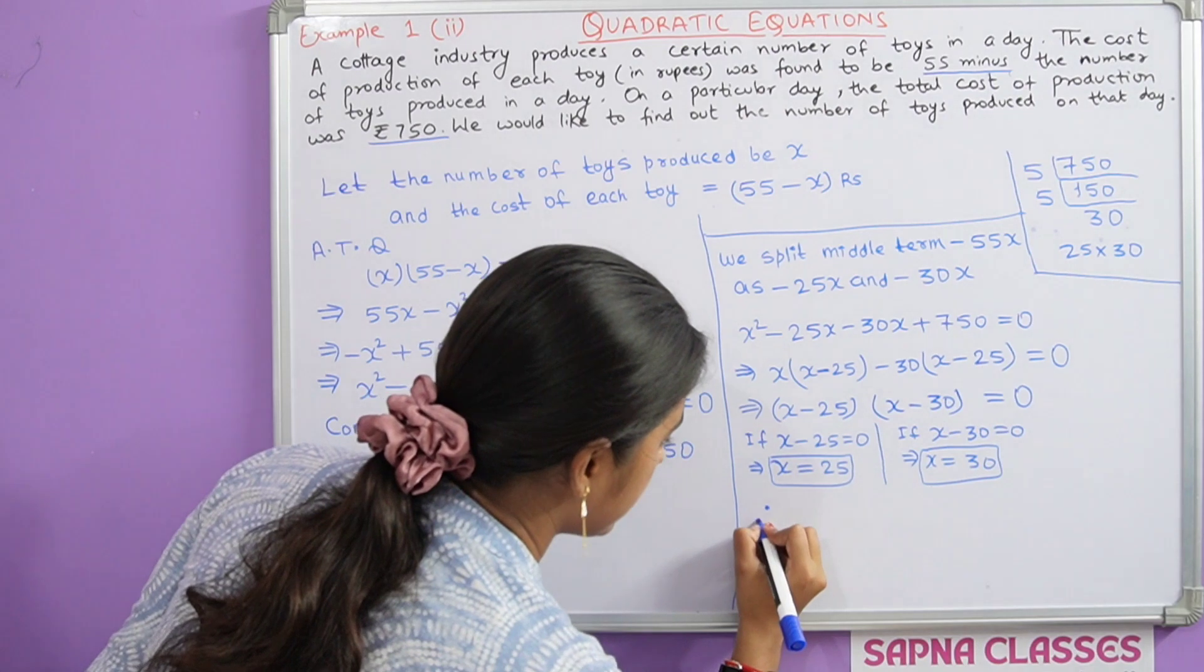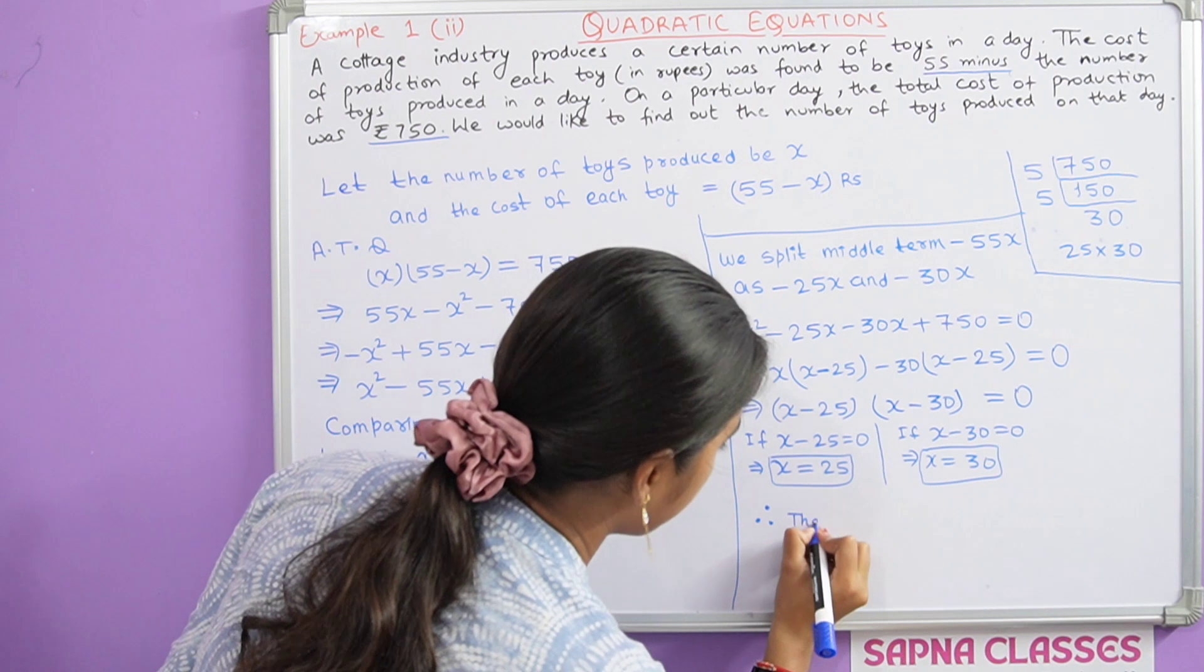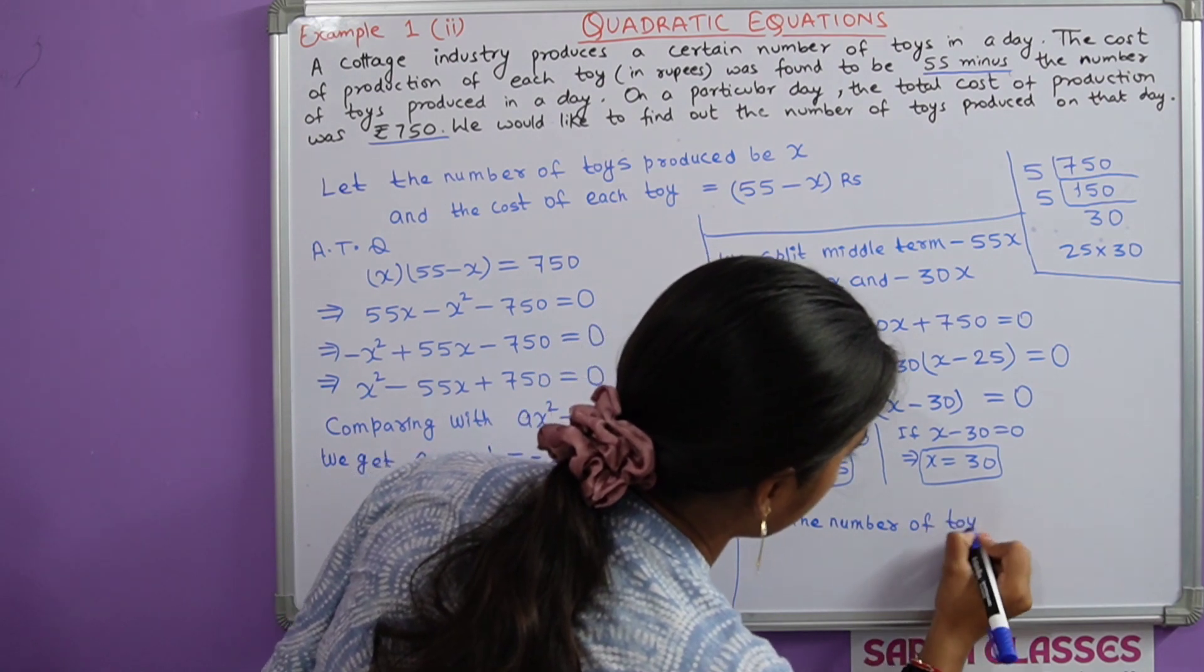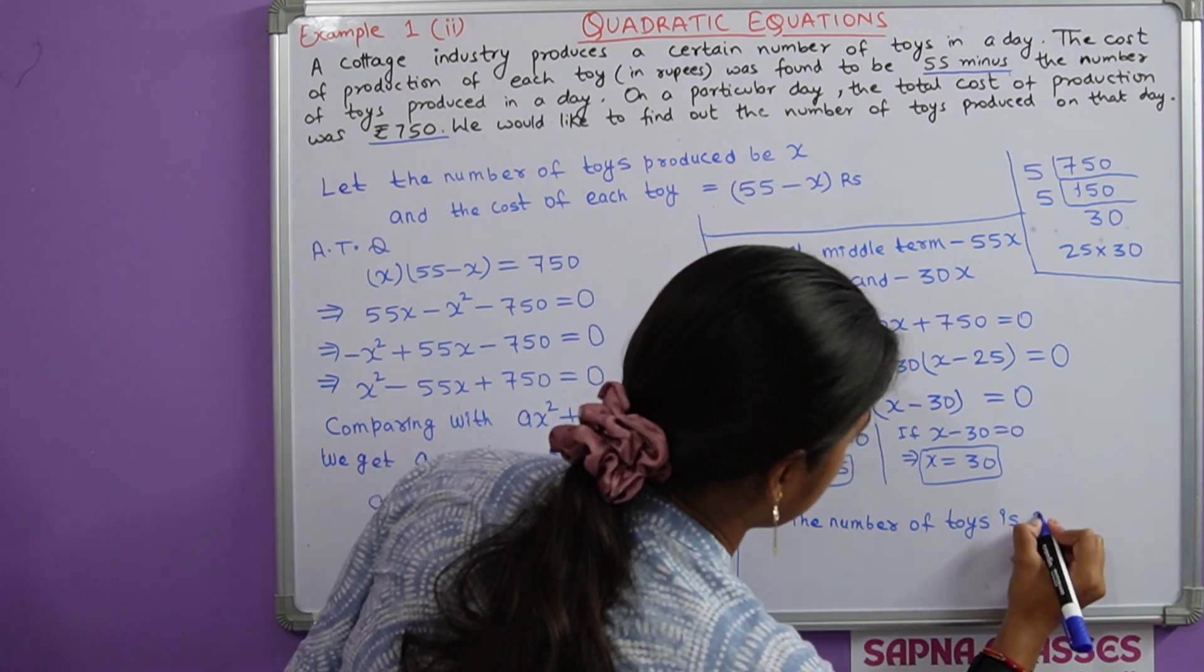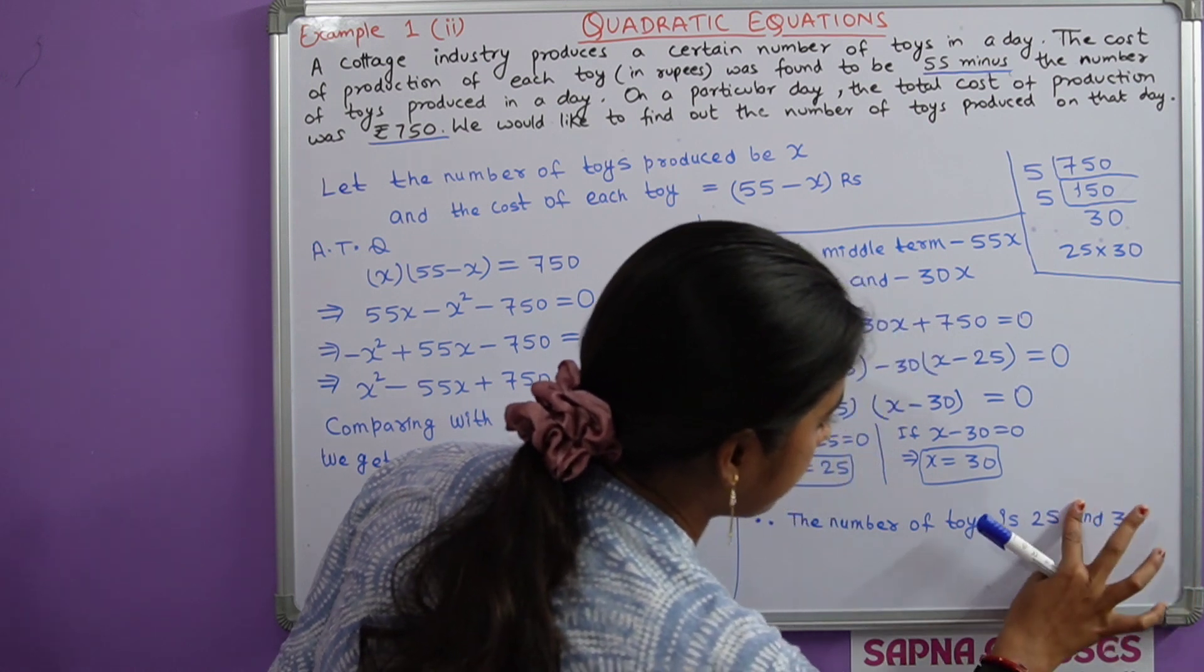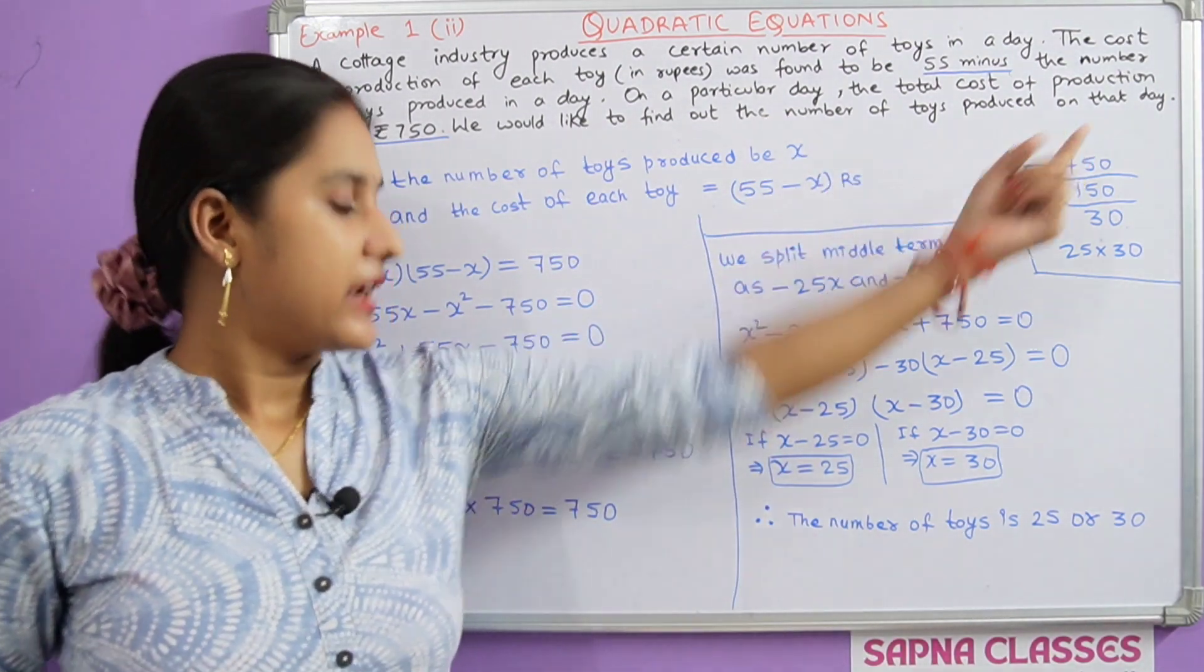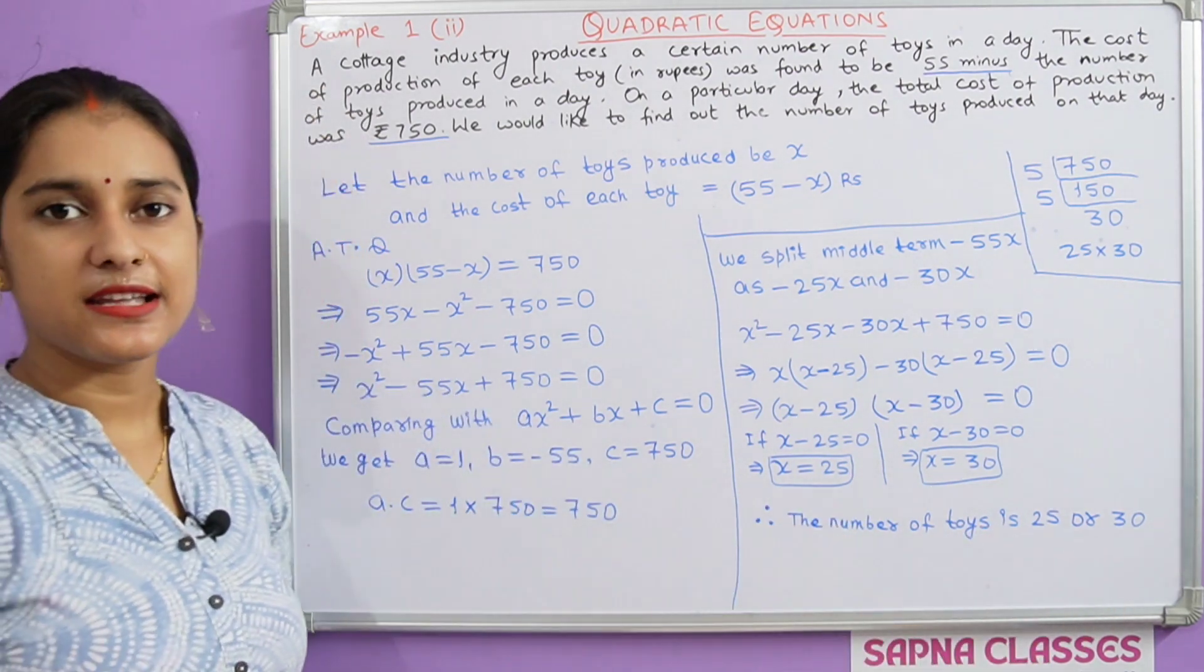And if x minus 30 equal to zero, this implies x equal to 30. Therefore the number of toys is 25 or 30. This is our answer.